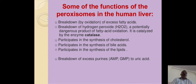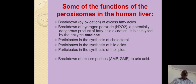Some important functions of paroxysomes in the human liver: breakdown by oxidation of excess fatty acids; breakdown of hydrogen peroxide, a potentially dangerous product of fatty acid oxidation, catalyzed by the enzyme catalase. They participate in the synthesis of cholesterol, the synthesis of bile acids, and the synthesis of lipids. Also breakdown of excess purines — AMP and GMP — to uric acid.